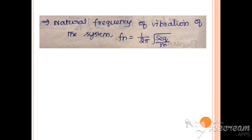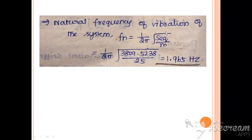Next, we use the natural frequency formula: f_n = (1/2π) × √(S/M). By substituting all known values, the natural frequency of the entire spring-mass system is found to be 1.96 Hz.